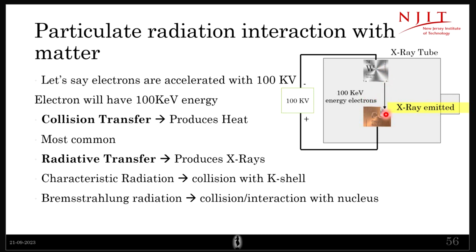When the electron reaches the target, there will be either collision or radiative transfer. In collision, the high-energy electrons bombard the metal and produce heat through friction — that is the most common outcome, and a lot of heat is generated in the tube. You therefore need a very good heat sink or cooling system. The other thing that happens is radiative transfer, which produces x-rays.